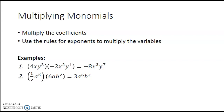Remember, a monomial itself is a product — a product of a number and one or more variables. So when we are multiplying, we are just rearranging that product and multiplying the factors that are the same together: multiplying the real numbers, multiplying any of the same type of variable with the same letter. When we multiply, we are using the product rule for exponents, which tells us that if you have the same base, you are adding the exponents together.